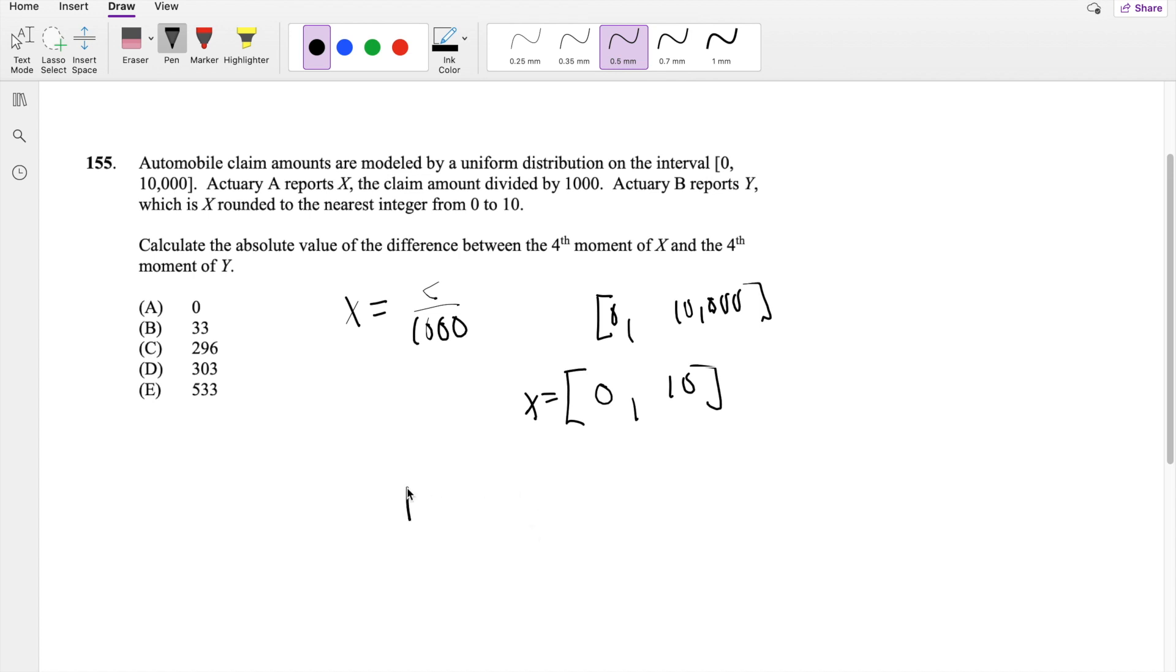It's uniform on this interval, so we know that the fourth moment E(X^4) is equal to the integral from 0 to 10 of X^4 times the probability function. For a uniform distribution, it's always 1 over (B minus A). In our case, that's 1 over 10.